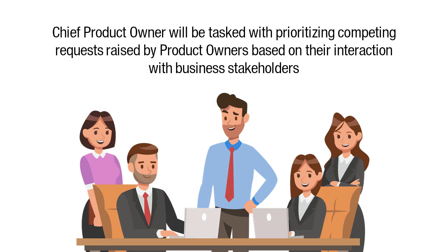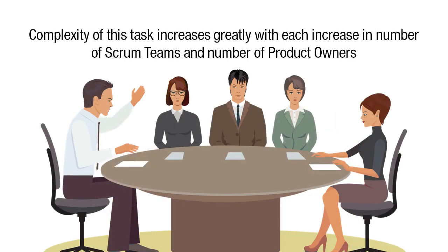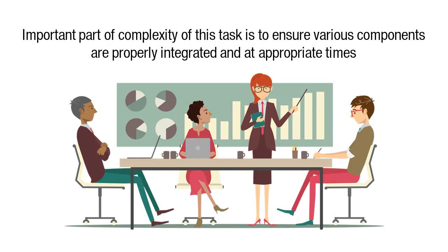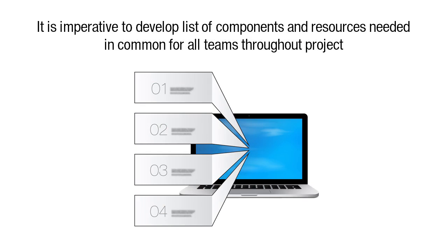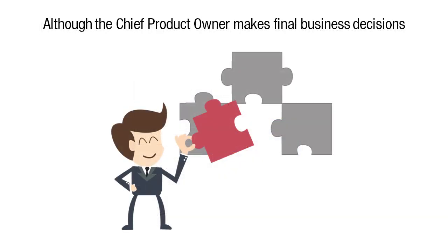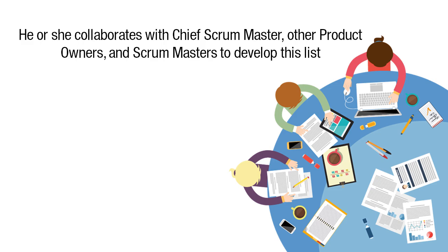In a large project, the Chief Product Owner will be tasked with prioritizing competing requests raised by the product owners, based on their interaction with the business stakeholders. The complexity of this task increases greatly with each increase in the number of Scrum teams and the number of product owners. An important part of the complexity is to ensure various components are properly integrated and at appropriate times. Therefore, it is imperative to develop a list of components and resources needed in common for all teams throughout the project. Although the Chief Product Owner makes the final business decisions, he or she collaborates with the Chief Scrum Master, other product owners, and Scrum masters to develop this list.